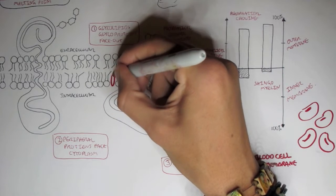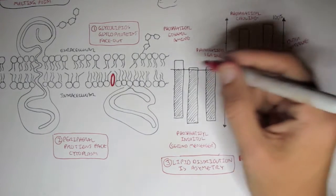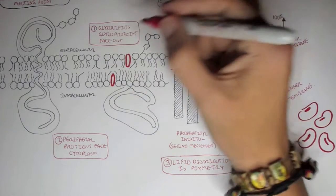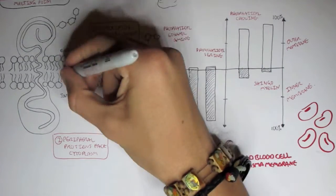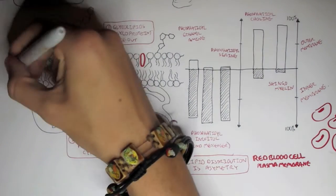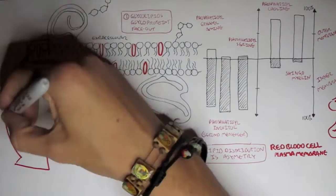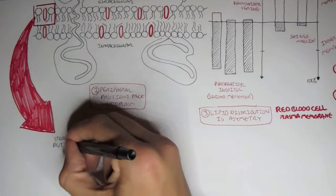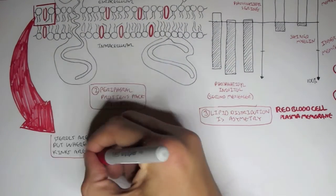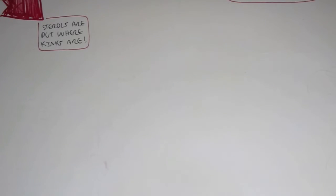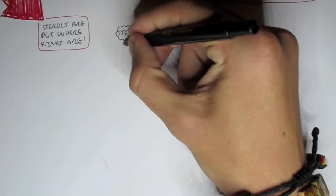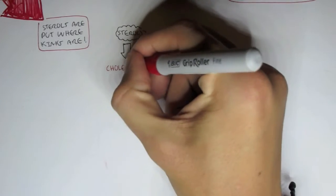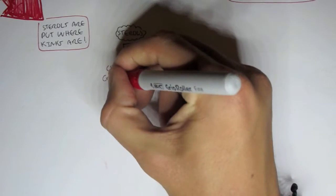Now going back to the lipid bilayer structure, remember the unsaturated fatty acids which forms kinks? Well they form gaps, essentially. So what fills these gaps? Well, sterols fills this gap. So sterols are put where kinks are, where the gaps are, which are formed by kinks. Sterols are the two types, cholesterol and ergosterol.